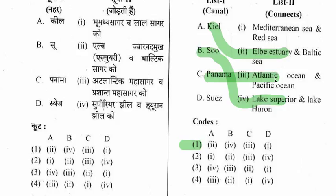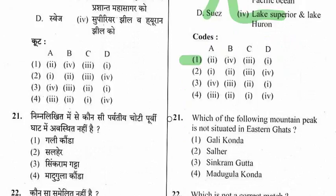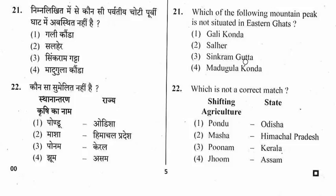Question 21: Which of the following mountain peaks is not situated in the Eastern Ghats? Options are Gali Konda, Salher, Sinkram Ghat, and Madugula Konda. The right option is Salher — it is not situated in the Eastern Ghats. The rest are located in the Eastern Ghats.